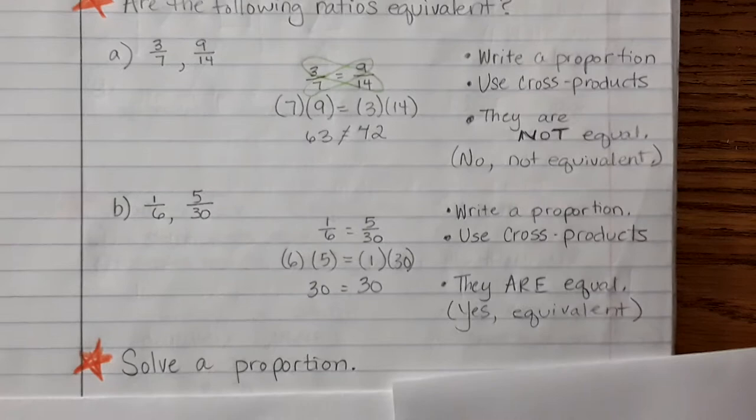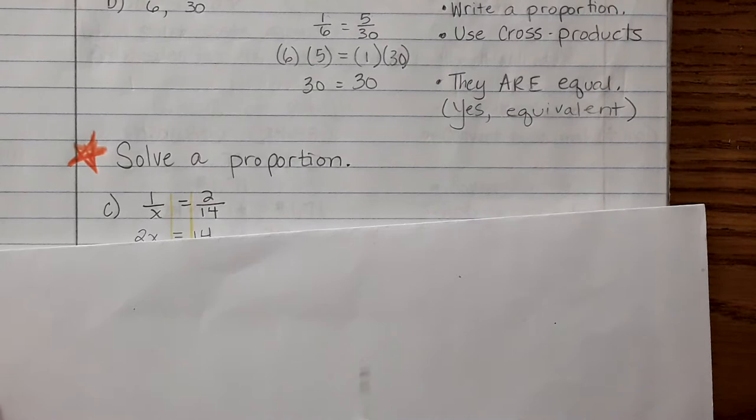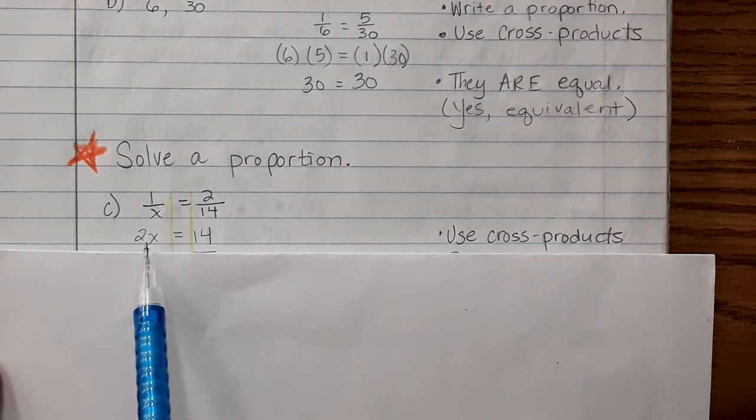Let's solve a proportion in this next part of our notes. Here's our first example, example C: 1 over x equals 2 over 14. We're going to use cross products. So again, multiplying in this direction, x times 2, we write 2x because the coefficient gets written before the variable, and 1 times 14 is 14.